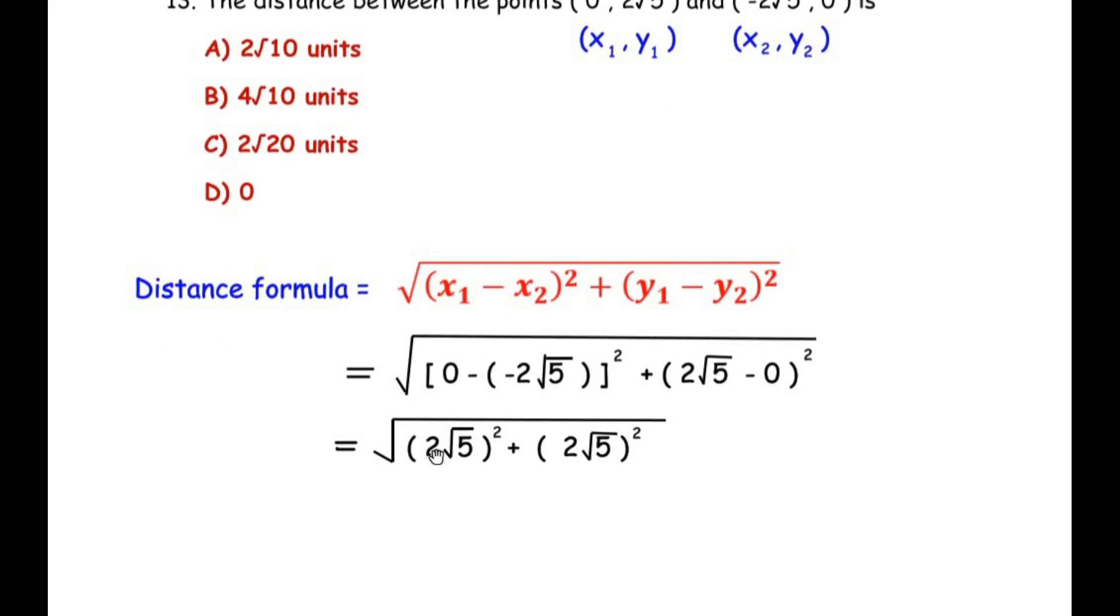Now here we are going to square the 2 as well as the square root of 5. So we get 2² is 4 and (√5)² is 5. So 4 times 5 gives us 20 and the same thing repeats. So we get √(20 + 20) that is √40.